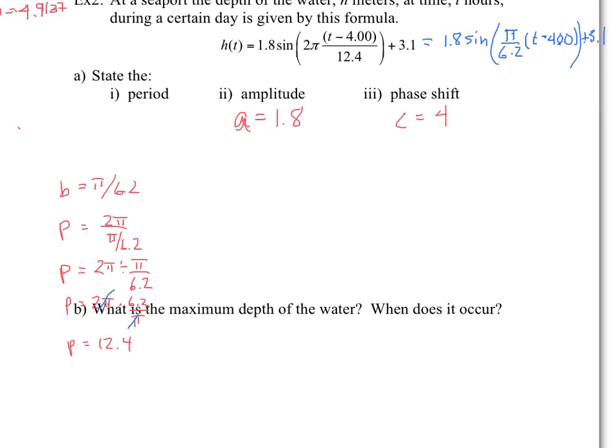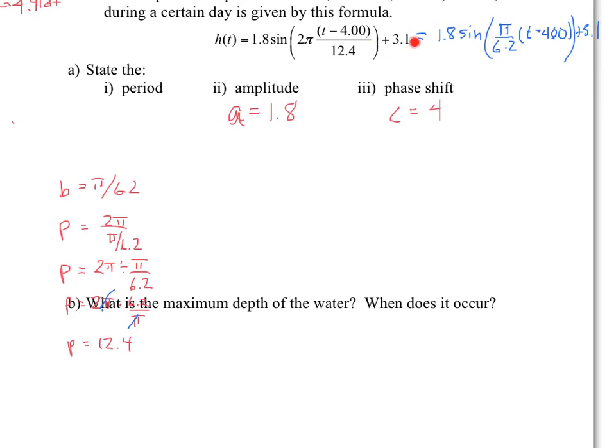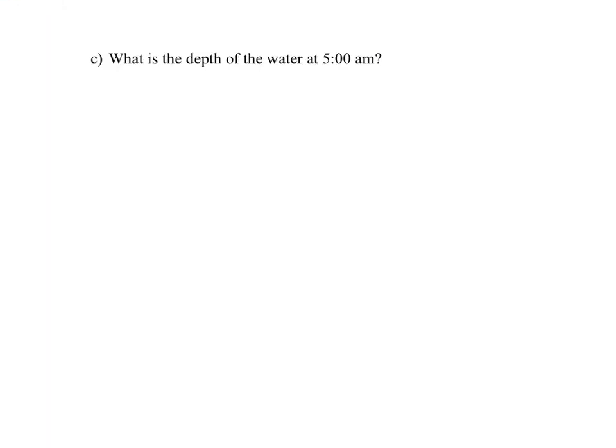So the maximum would be just equals to d plus the value of a. And we'll take the absolute value because if it was negative, you would go the opposite. So here, you go 3.1 plus 1.8, which means our maximum depth will be 4.9 meters. Okay, and the last part here, it asks you what is the depth of the water at 5 a.m.?